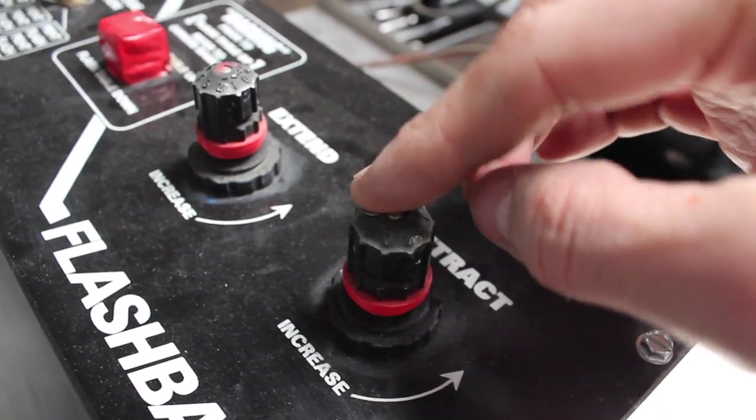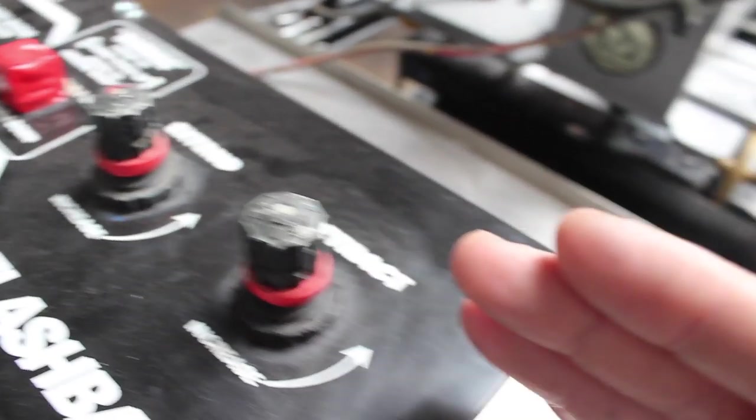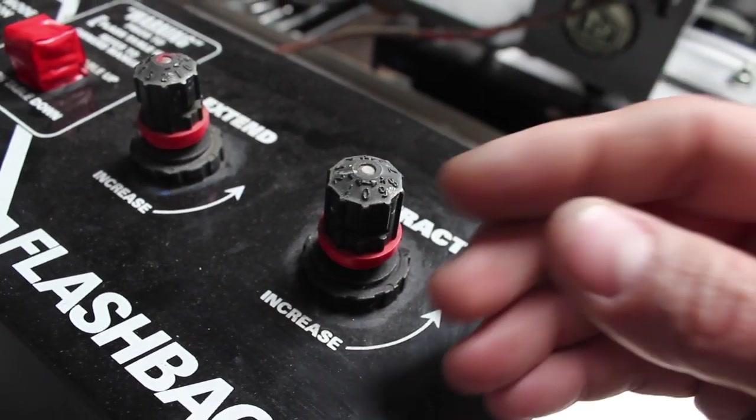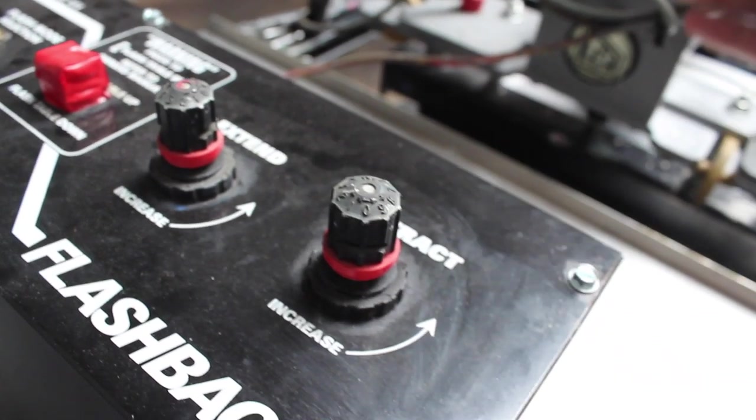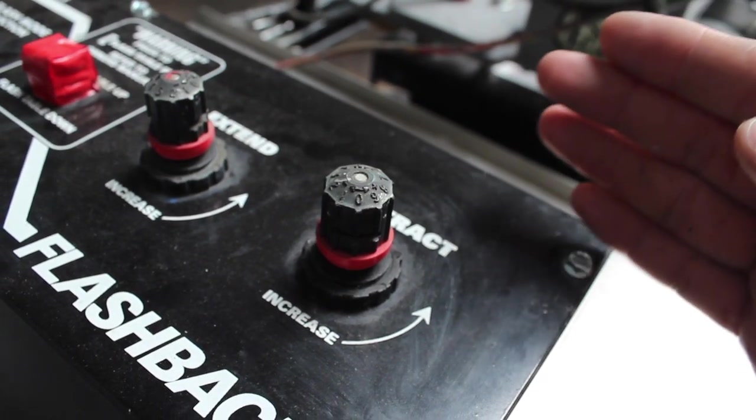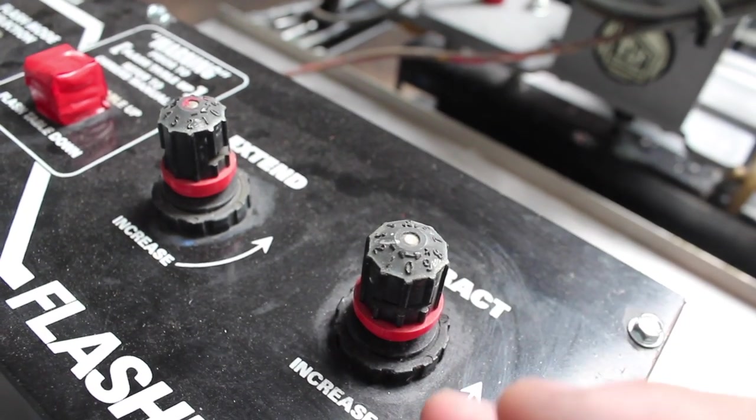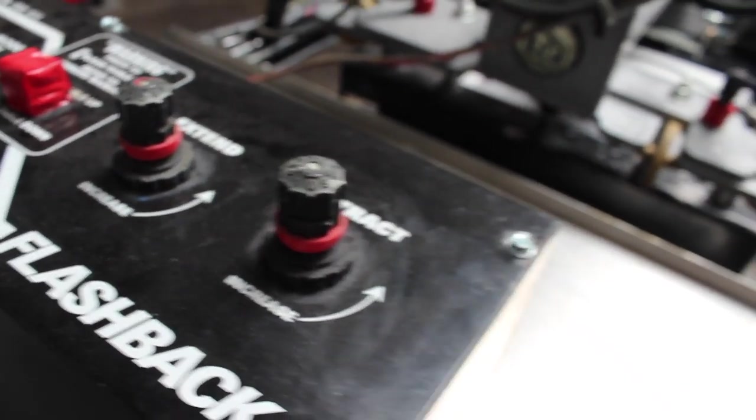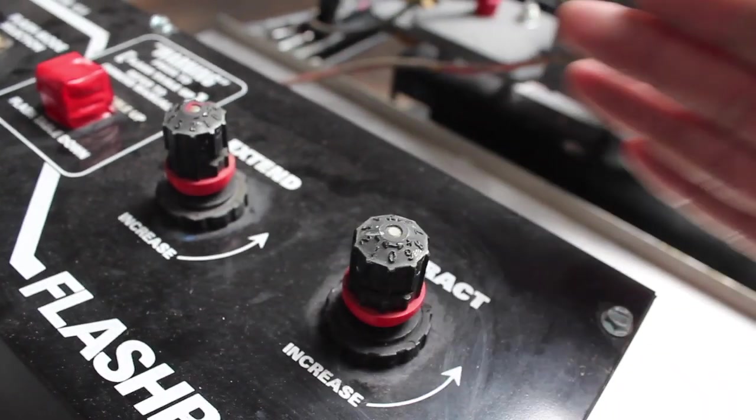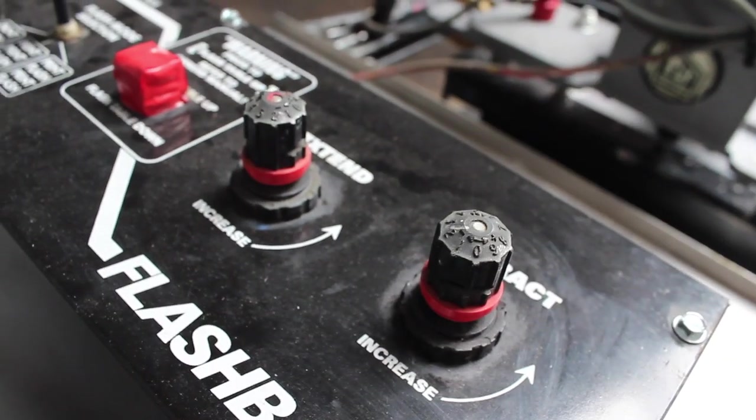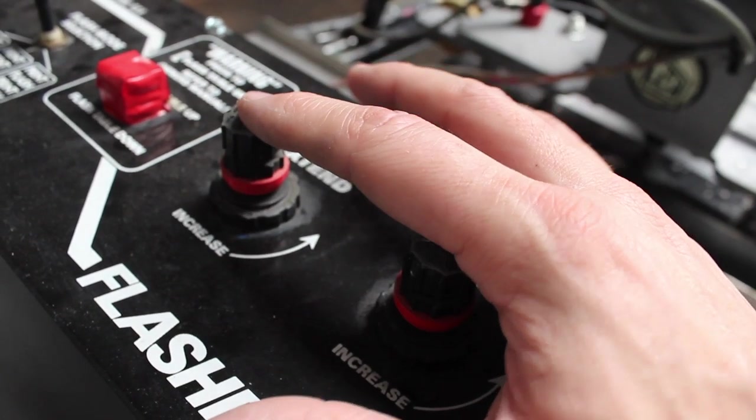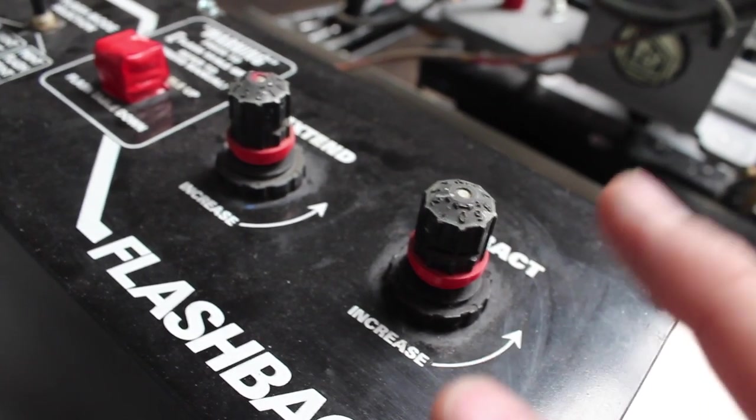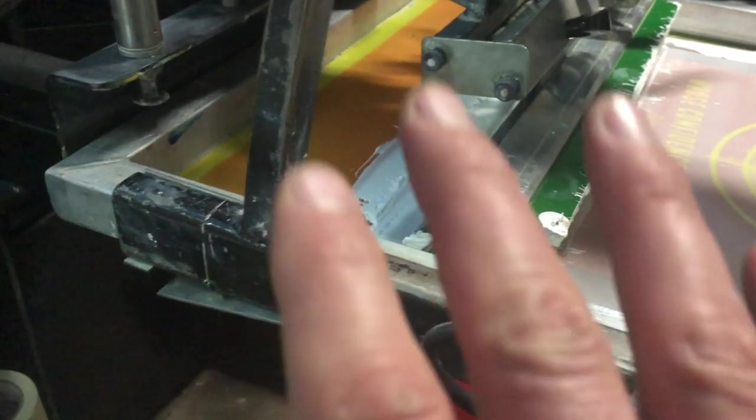Next thing we have is the extend and the retract control flow knobs here. If you turn this counterclockwise, it will make it extend or come back however fast you want it to do. Generally from what I've seen and how we've got ours set up is we'll have it extend quicker and retract slower. The reason we have it set that way is if we have it come out slow and then pull back really fast, it just tends to want to kind of clunk back. What we found is having the extends come out faster and then come back slower tends to be a little easier on the flashback and quicker.